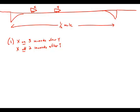If car X followed car Y across a certain bridge that is one half mile long, how many seconds did it take car X to travel across the bridge? In the prompt, we got a distance, and we're looking for a time.